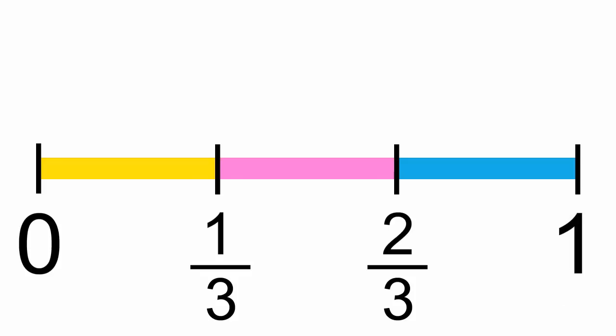So to show two-thirds on a number line, we put a dot right here. Notice that it's closer to 1 than it is to 0.